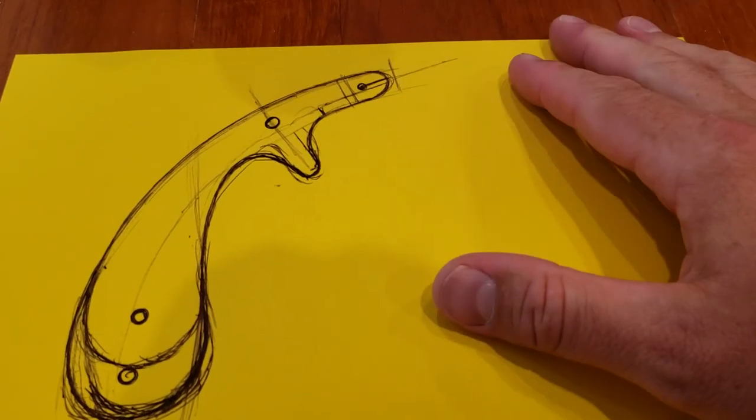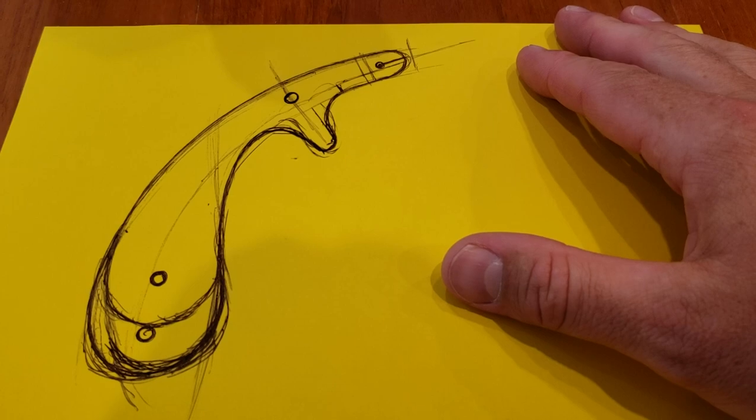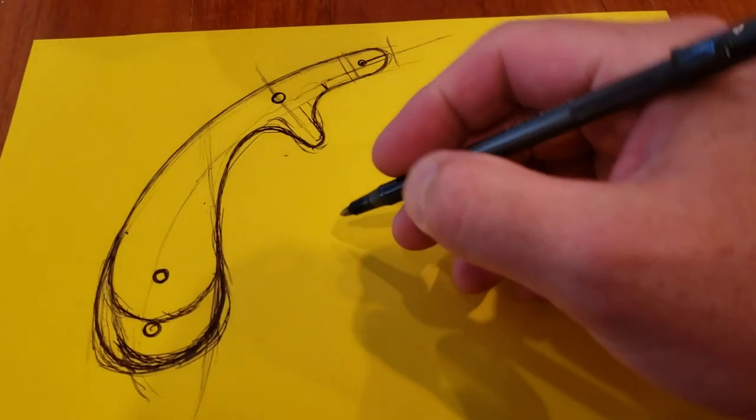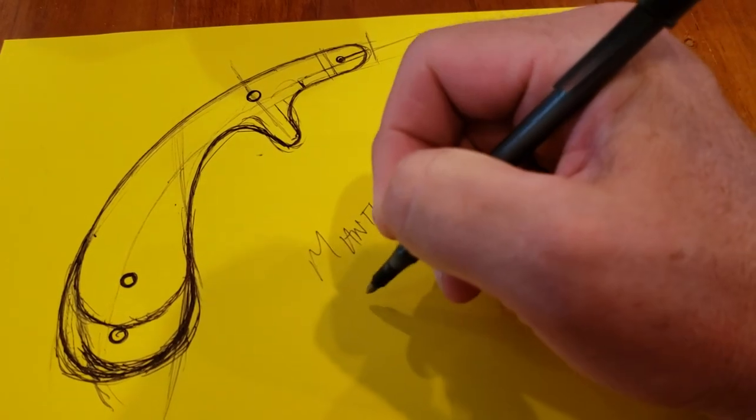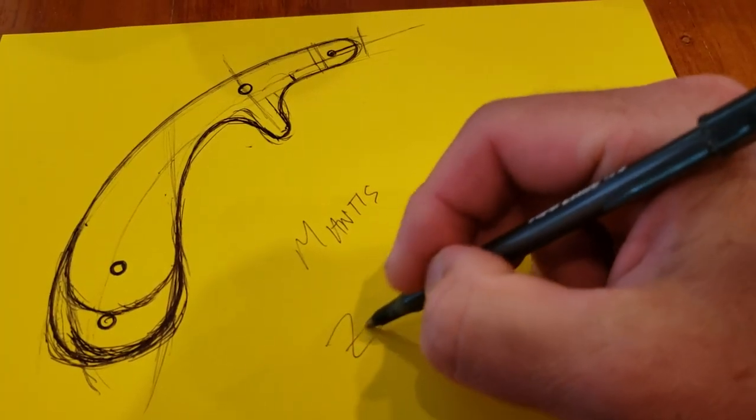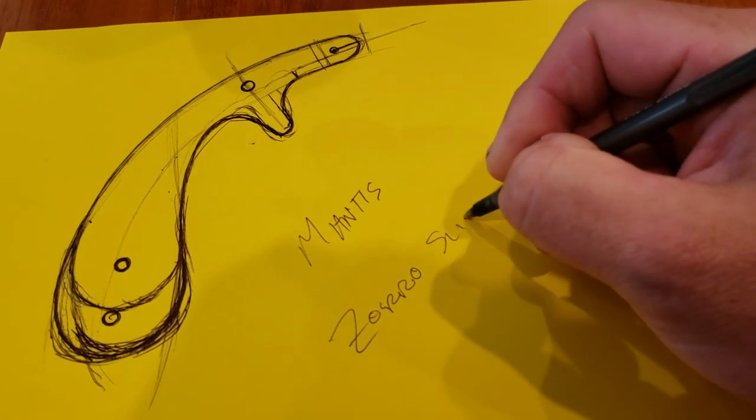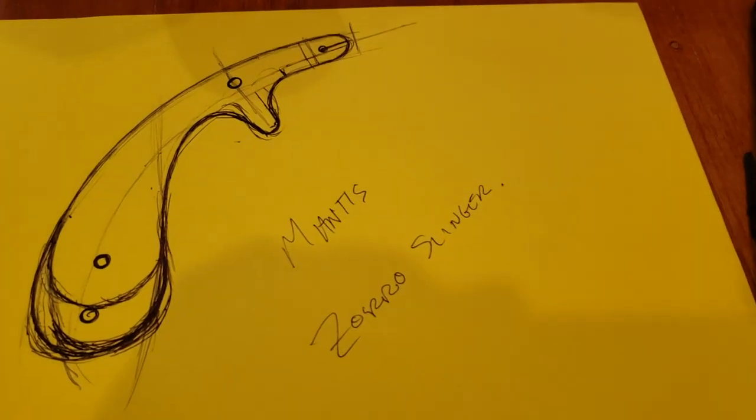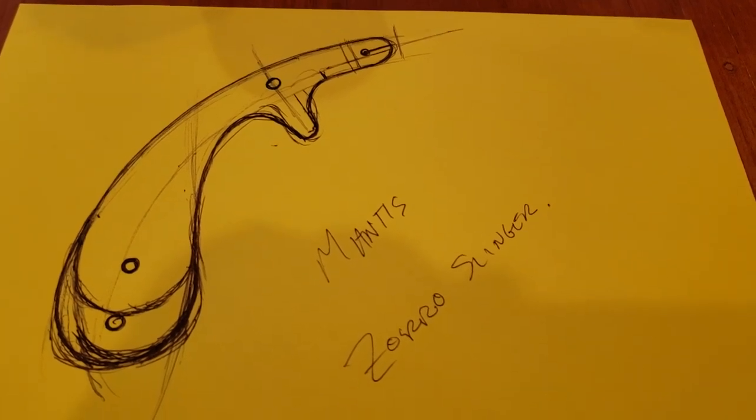Anyway, just kind of gives you guys an idea of how I think. Hopefully this helps you out. I believe this is called the Mantis and it was originally developed by Zorro Slinger. Okay, now I've obviously modified it a bit, but the basic idea is the same.